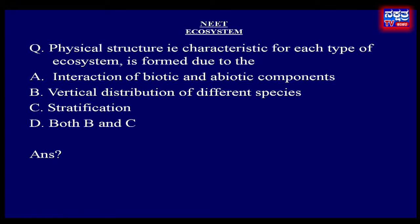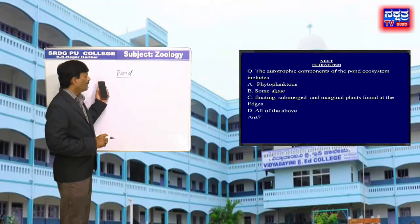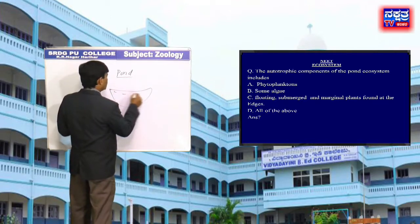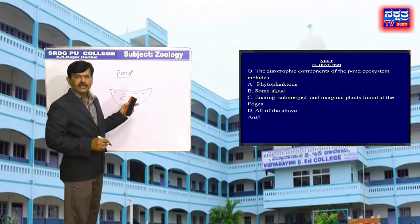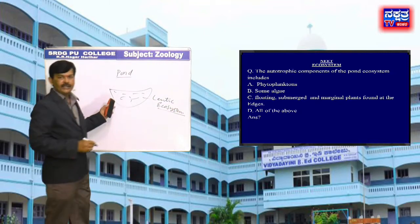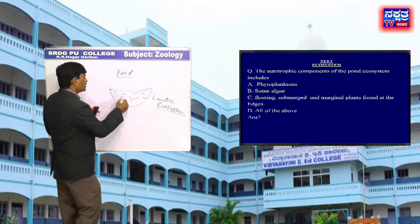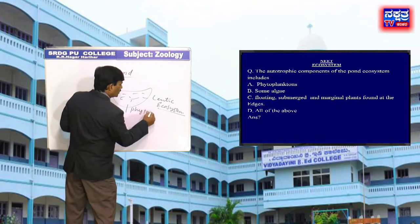Move to the next question. The autotrophic components of the pond system includes — Option A: Phytoplanktons, B: Some algae, C: Floating, submerged and marginal plants found at the edges, D: All of the above. A pond is a lentic ecosystem — lentic meaning standing water. The autotrophic components of the pond ecosystem include phytoplanktons.